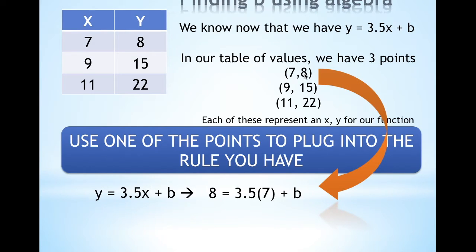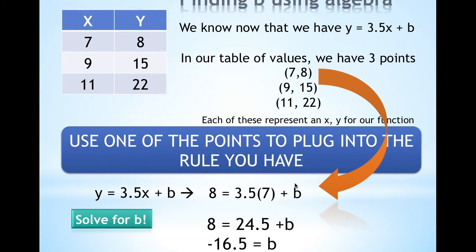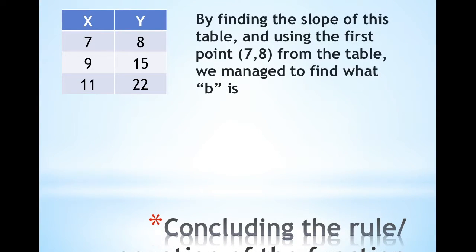7 is x and 8 is y. I'm going to plug it in here as x and y and simply solve for B. I get that B is equal to negative 16.5. So algebraically you can easily find what your B value is. By finding the slope first — which we did, it was 3.5 — and by using the first point (7, 8).